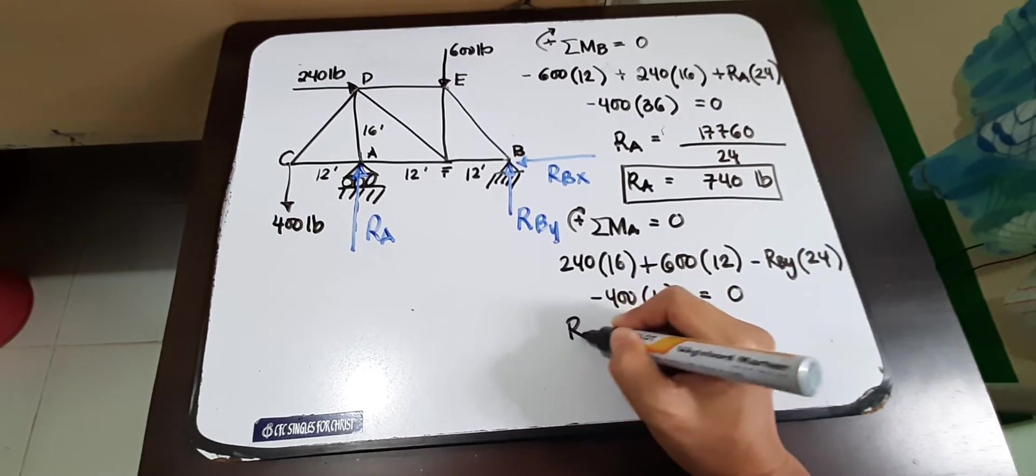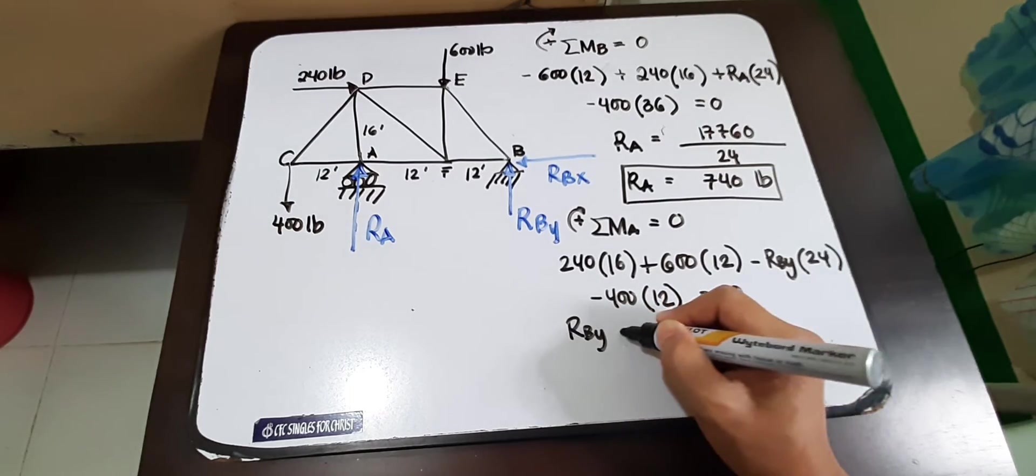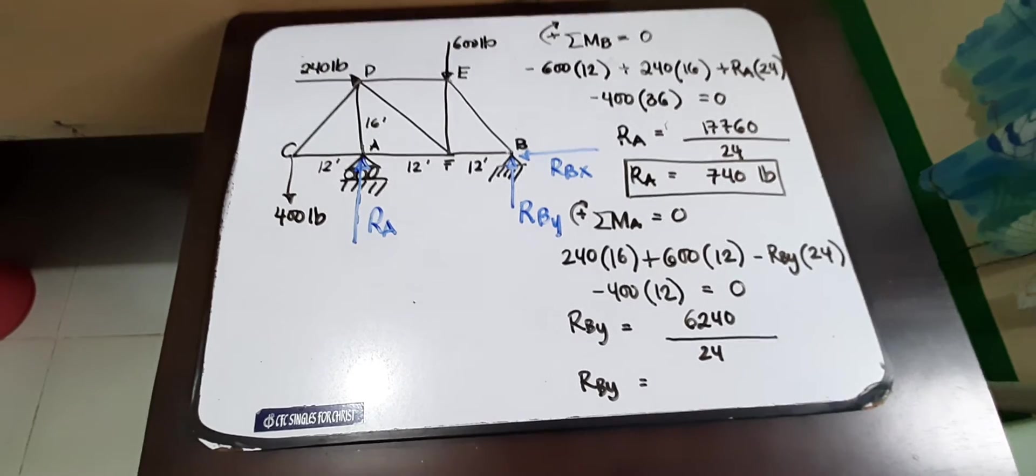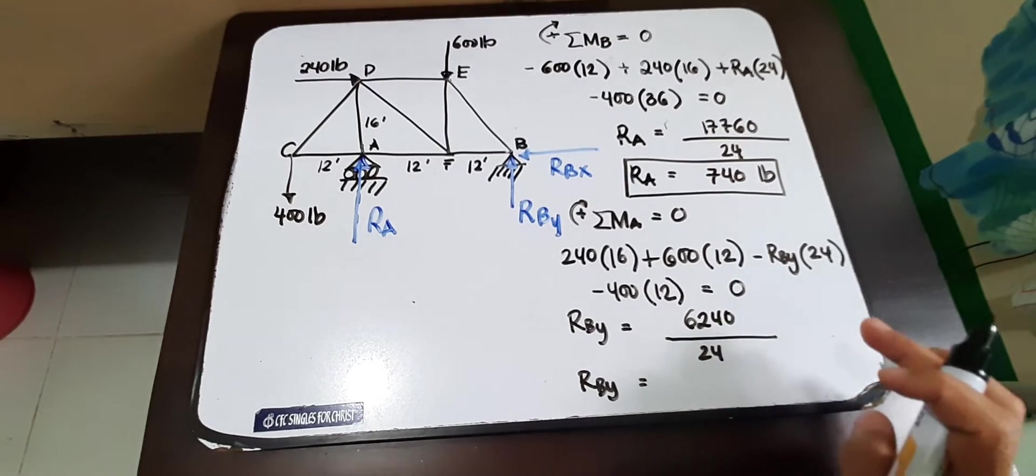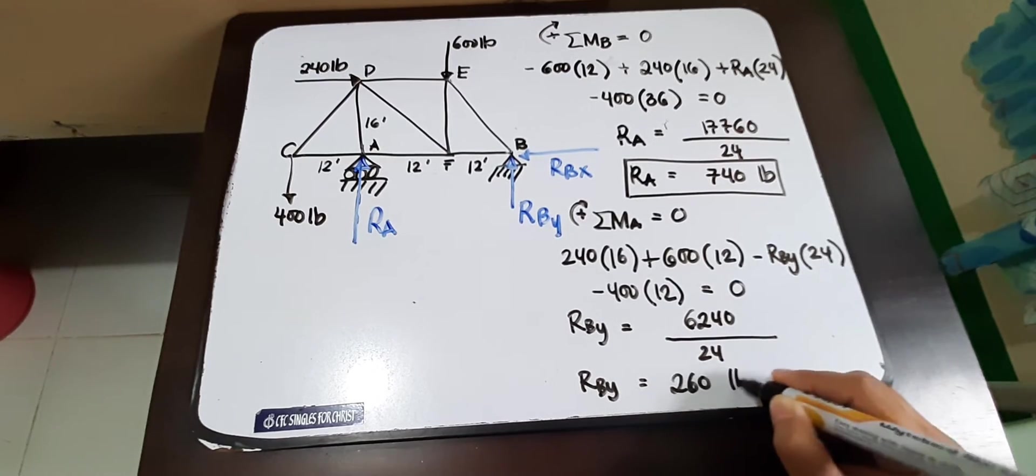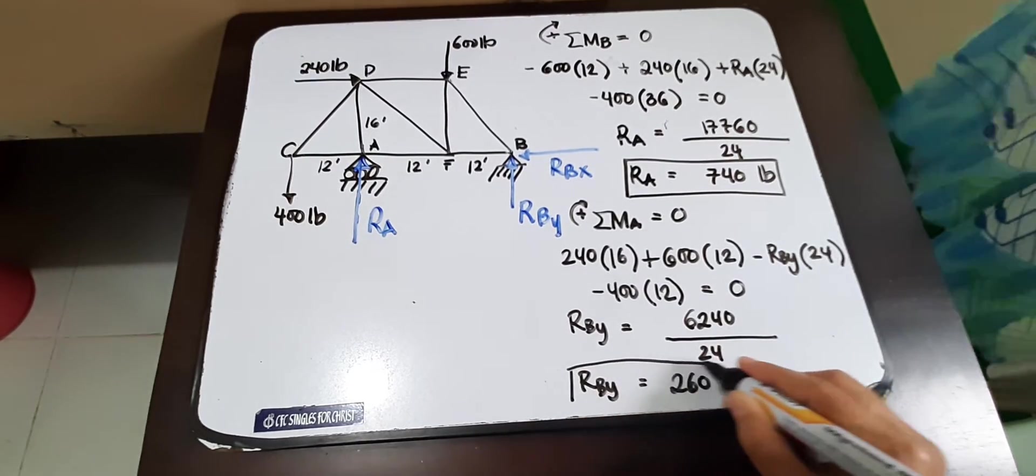So manipulating all of this, we can get our RBY as... Okay, so we have 6240 divided by 24, and so we have 260 pounds. So that would be our RBY.